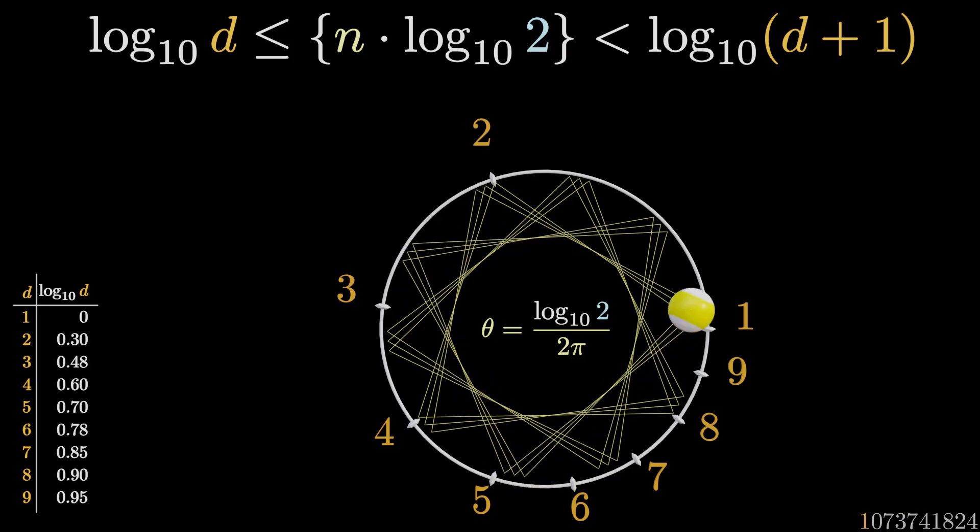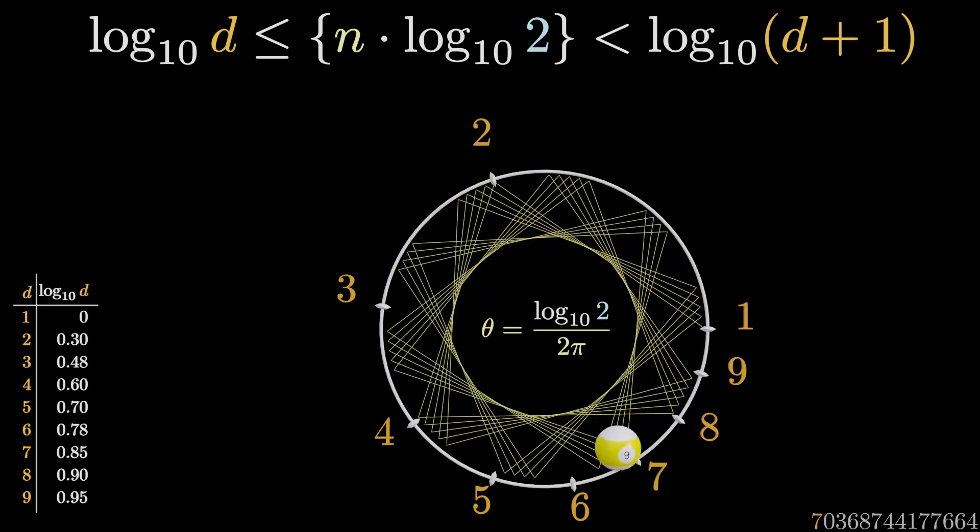From this particular pattern of the trajectory, it becomes immediately obvious why it takes such a long time until 7 and 9 appear as leading digits for the first time.